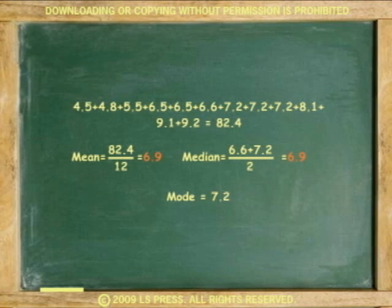The mean and median show exact central tendencies and the mode is off by only plus 0.3. Answer, the data shows central tendencies.